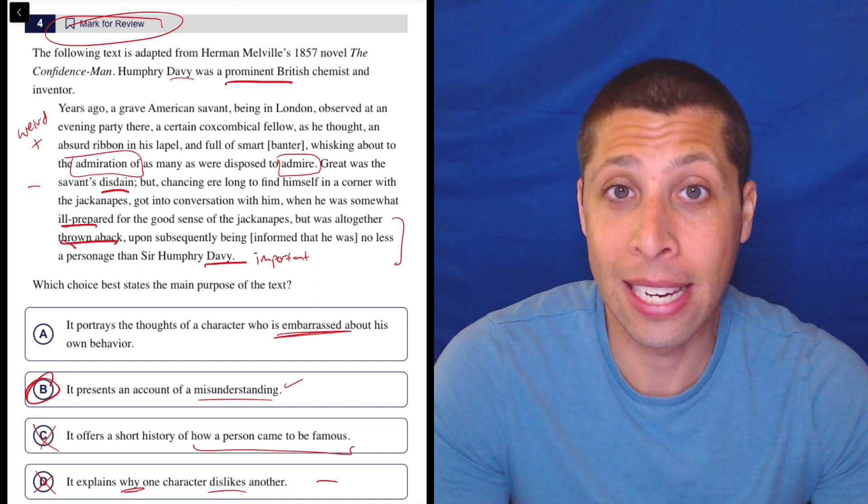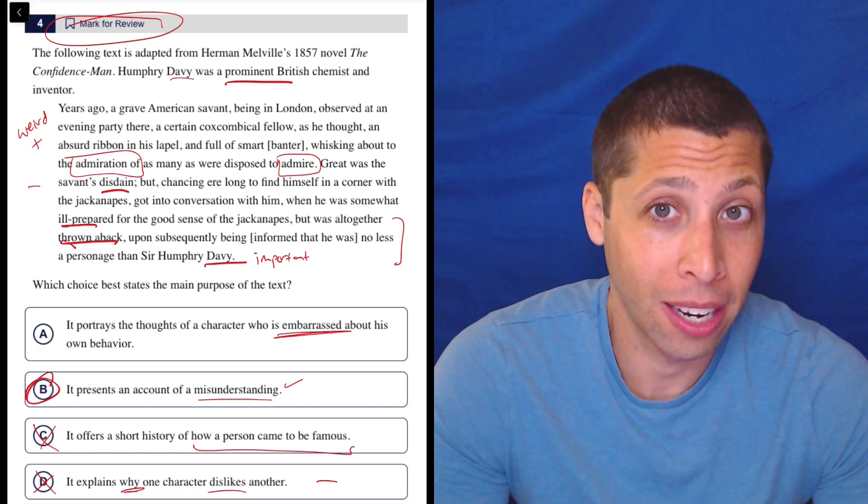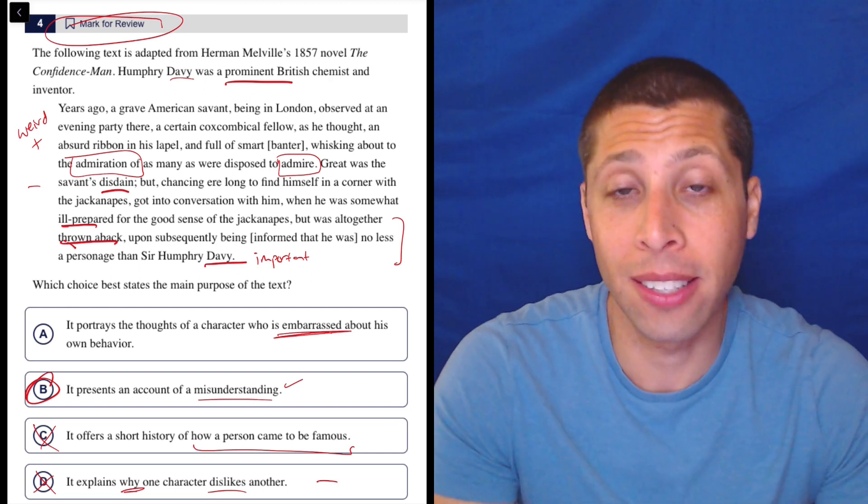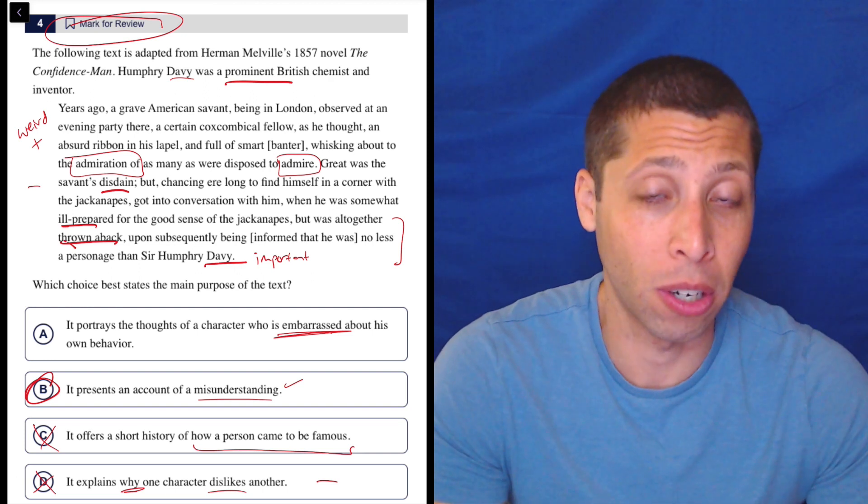But with a misunderstanding, we can prove that, right? He's talking to someone that he did not recognize was an important person. That's a misunderstanding. So, yeah, that's easier to prove. And generally, that is why on the SAT, weaker answers are better, is they say less, so they're easier for us to prove.